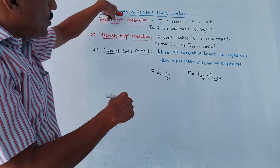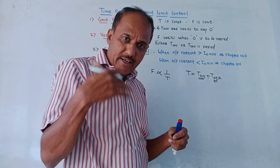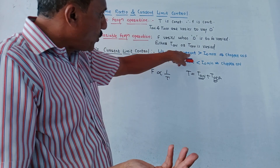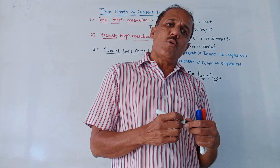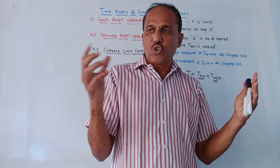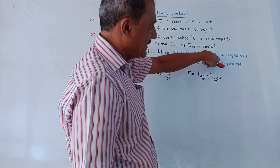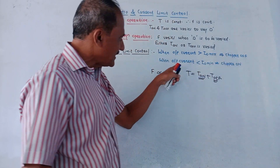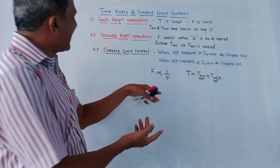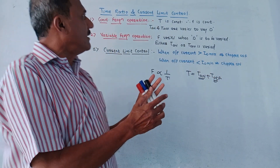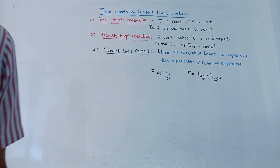Next is current limit control. It is related to the value of current. There are two threshold levels: i_0_max, the maximum value of output current, and i_0_min, the minimum value. When the actual output current becomes greater than i_0_max, the chopper is turned off. Conversely, when output current becomes less than i_0_min, the chopper is turned on. These are the time ratio and current limit control methods of the chopper. Thank you for watching this video.